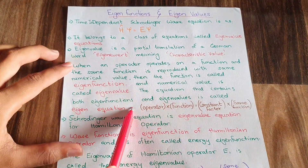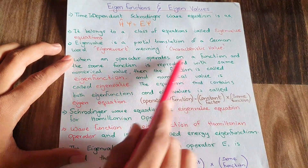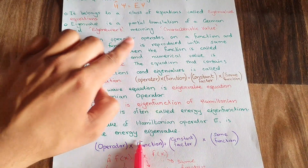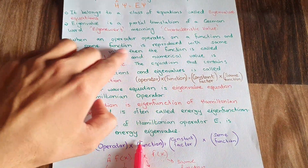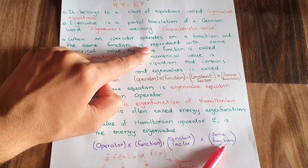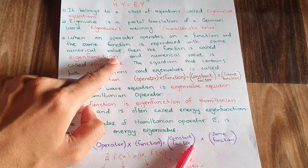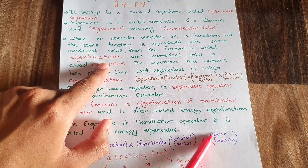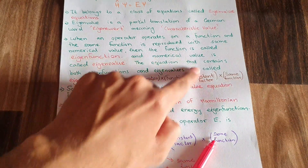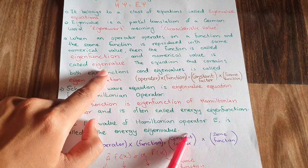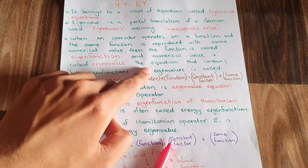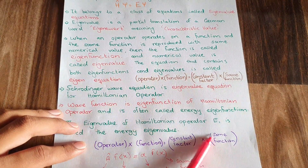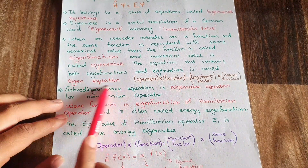The definition of an eigenequation: when an operator operates on a function and the same function is reproduced with the same numerical value, then the function is called an eigenfunction and the numerical value is called the eigenvalue. An equation that contains both an eigenfunction and an eigenvalue is said to be an eigenequation.